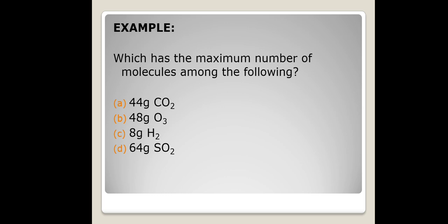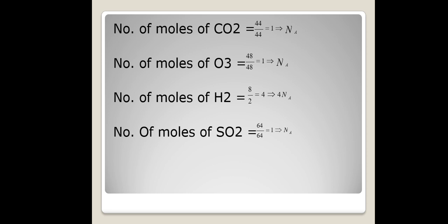Next example: which sample has the maximum number of molecules? The easiest approach is to find number of moles for each substance. Number of moles of CO₂: 44 g ÷ 44 (molecular weight) = 1 mole = Nₐ molecules. Number of moles of O₃: 48 g ÷ 48 = 1 mole = Nₐ molecules. Number of moles of H₂: 8 g ÷ 2 (molecular mass of H₂) = 4 moles = 4Nₐ molecules.